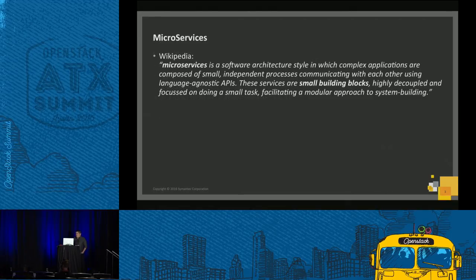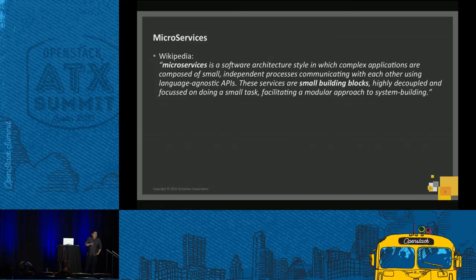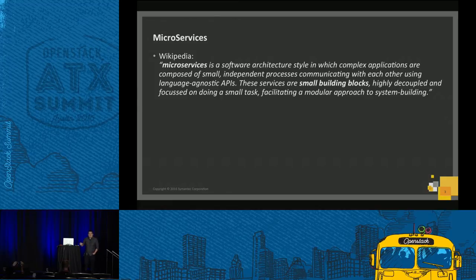So first of all, what is microservices? This is pretty much from Wikipedia. You've been hearing this a lot, and the main point is that you architect your application in a way that decouples it, and every single piece or group becomes a service that talks with the others. So you can have your application — if it's a billing system or whatever — your billing system becomes one microservice, your account management becomes another microservice, and you split them apart.